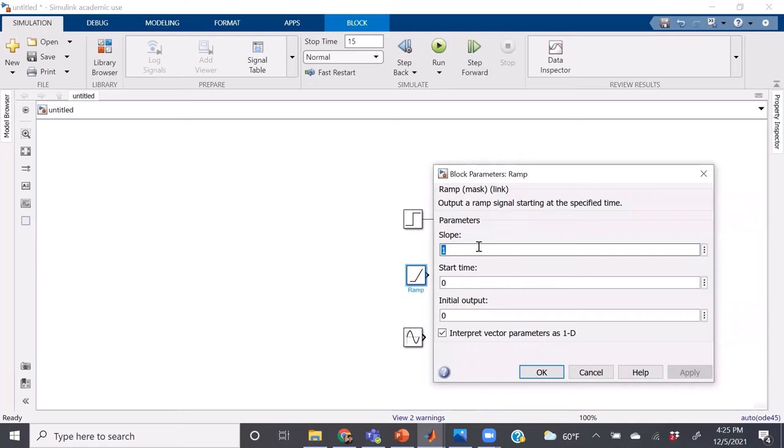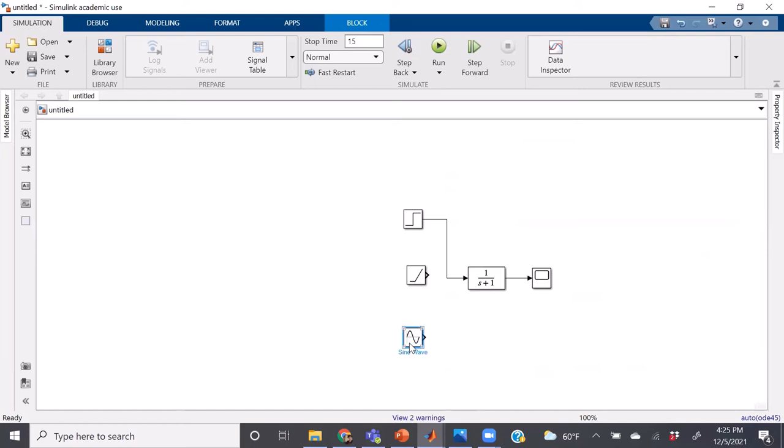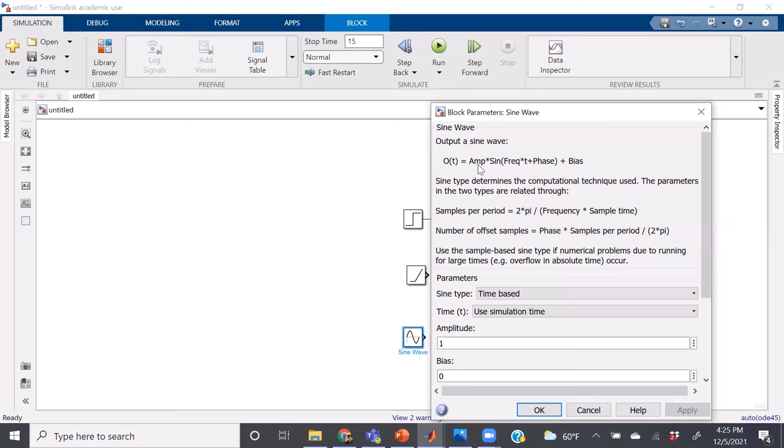And then for sine wave, it'll ask you to do the same parameters we discussed previously, such as amplitude and frequency, but also phase and bias if you have those parameters available.